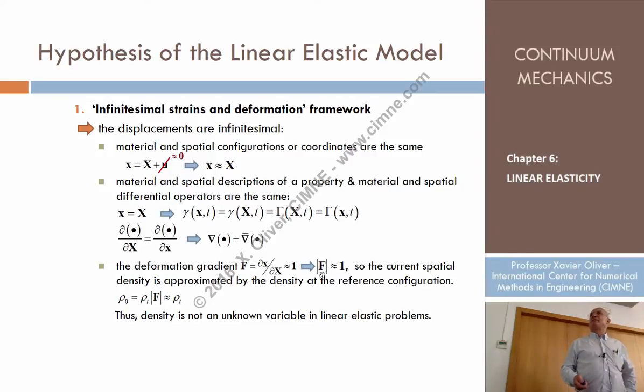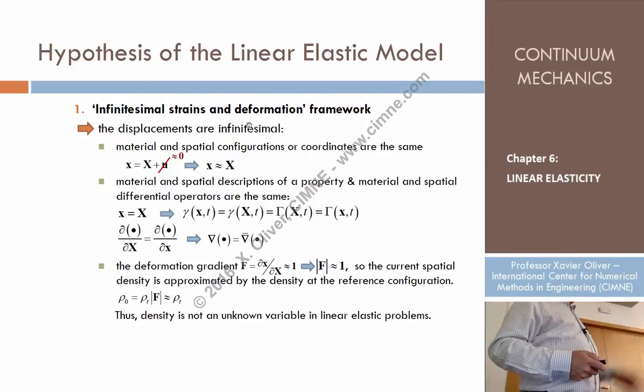What happens now if this determinant is approximately equal to one? That means that the density doesn't change. So in the infinitesimal strain theory, in material description, we can say that the material description of the density doesn't change with time. So look, this also provides automatically the solution of one of the unknowns. I said that one of the unknowns is the density. What can we say about the density in the infinitesimal strain theory? The density is known equal to the original density. That is important.